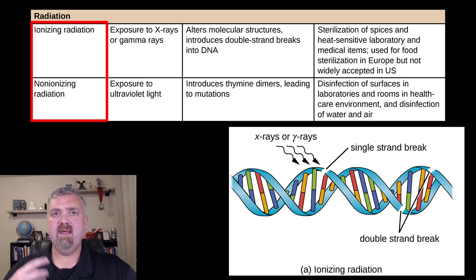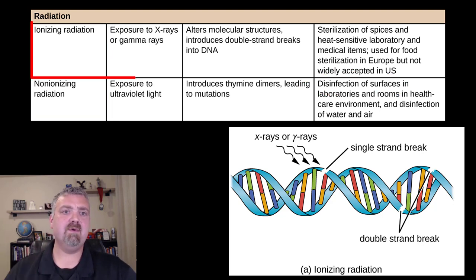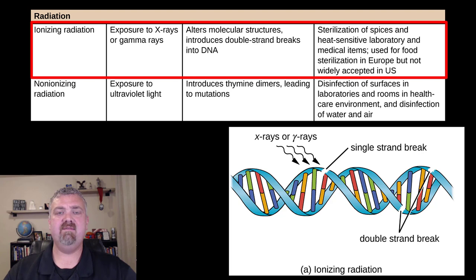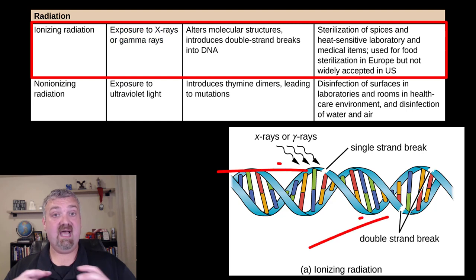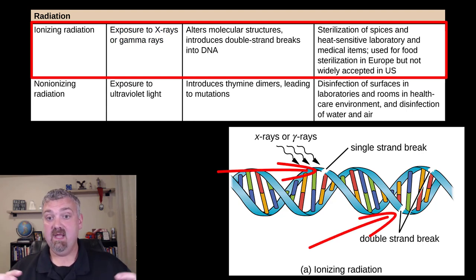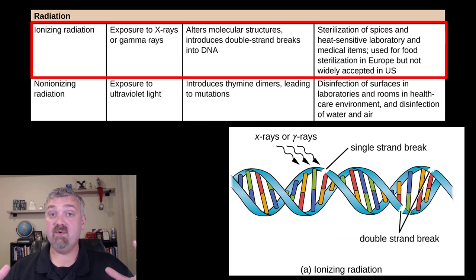A couple of key differences right out of the gate. Ionizing radiation is much more powerful. Non-ionizing radiation is only useful on surfaces, kind of because of that power difference. Ionizing radiation involves very high intensity rays like x-rays and gamma rays. It causes damage to the entire double helix of DNA, which can lead to mutations directly or when repair mechanisms try to fix it, greatly accelerating mutation rates until cells die.